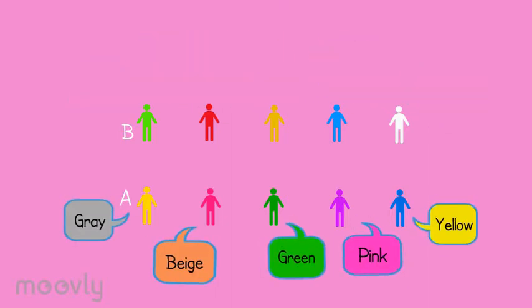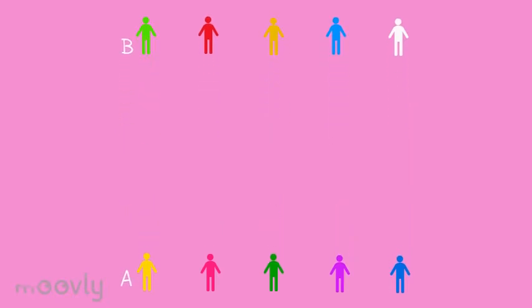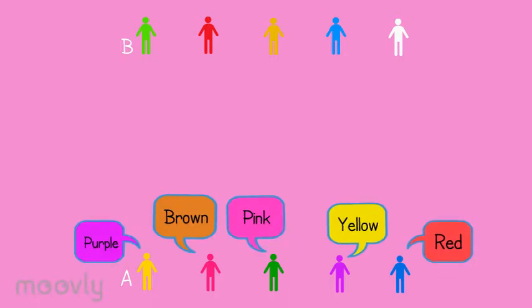When this goes well, everyone takes three big steps back so everyone now stands further away from each other. Again on the same volume, a color is being said and repeated by the other person. Now it's almost impossible to hear the color, so they have to find another way of communicating.